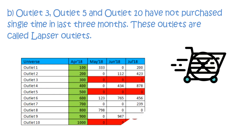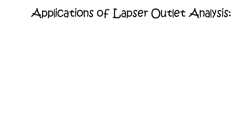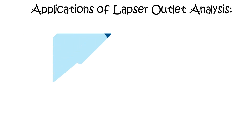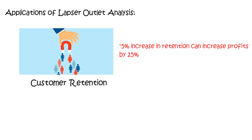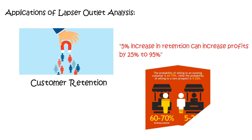Sales managers should focus on these 3 outlets and try to solve their issues. Moving on, the applications of Lapsed Outlet Analysis are as follows. This analysis can help in increasing customer retention — as per the latest business findings, a 5% increase in retention can increase profits by 25% to 95%.